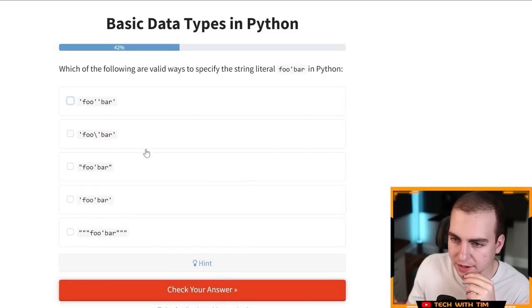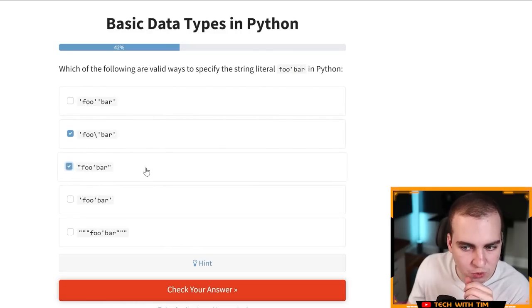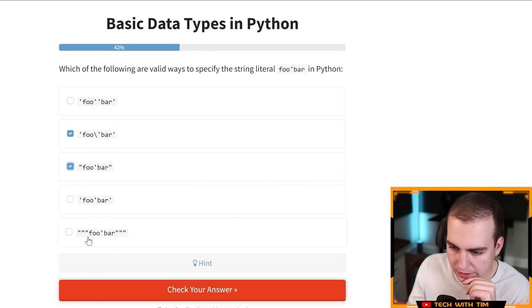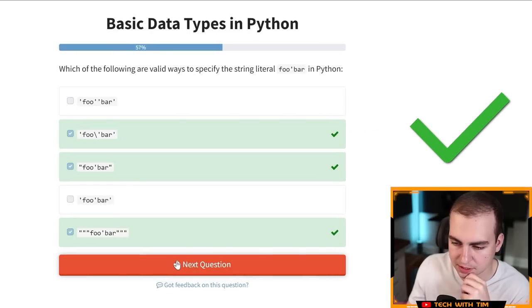Okay. I'm fine with that one. Let's go next. Which of the following are valid ways to specify the string literal food bar in Python. Okay. That's not going to be good because we're going to have two separate strings. This will work because you're escaping that. Although, Oh no, it wants that character. Yeah. Okay. So that will work. This will work because you're wrapping the single quote in double quotes. This will not work. This, I believe will work. So let's see if that's correct. And there we go. Nice. Okay.